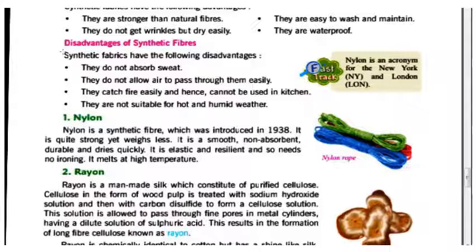Rayon is a man-made silk which constitutes purified cellulose. The cellulose in the form of wood pulp is treated with sodium hydroxide solution and then with carbon disulfide to form the cellulose solution. The solution is allowed to pass through fine pores in metal cylinders having a dilute solution of sulfuric acid, resulting in the formation of long fiber cellulose known as rayon.